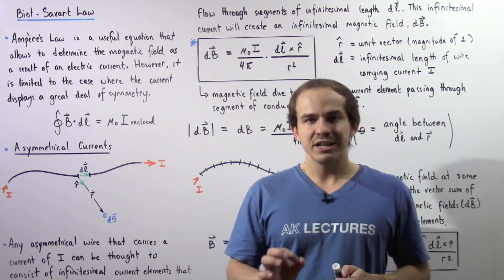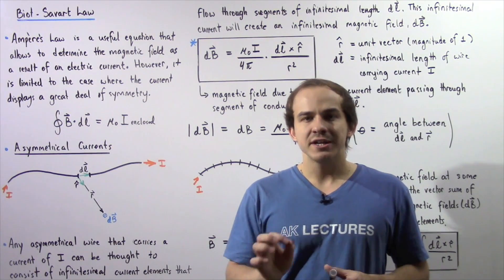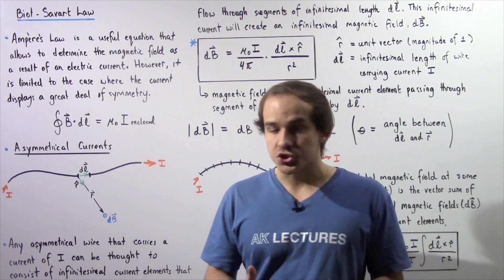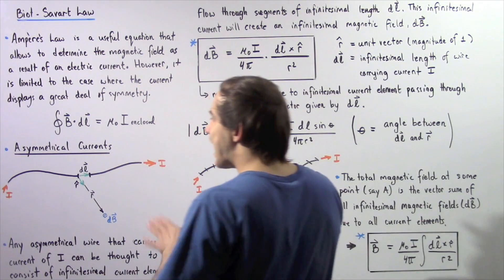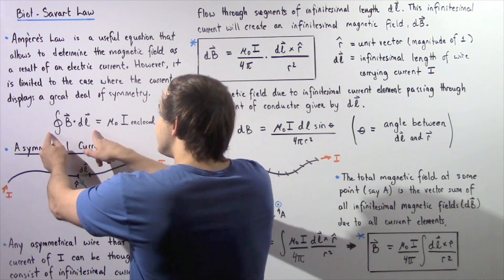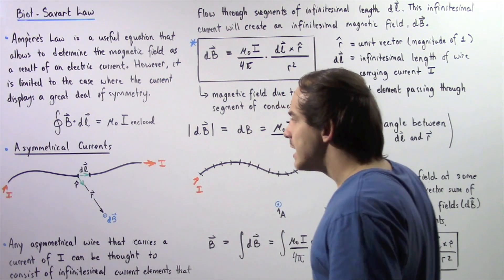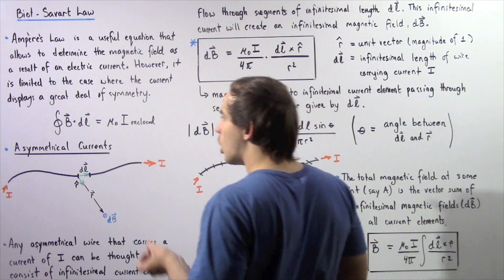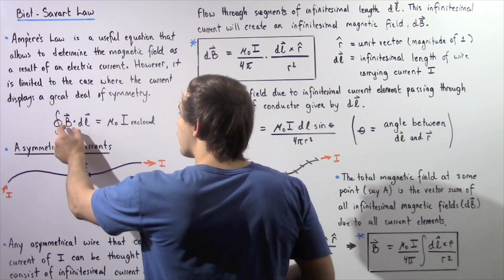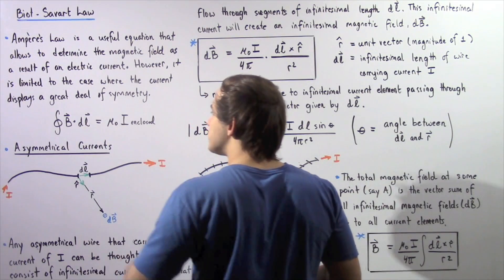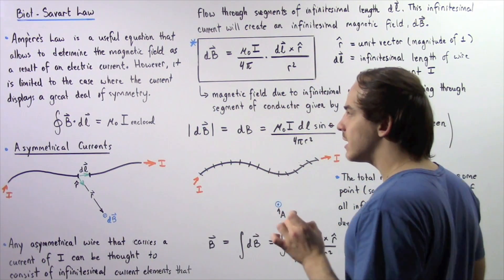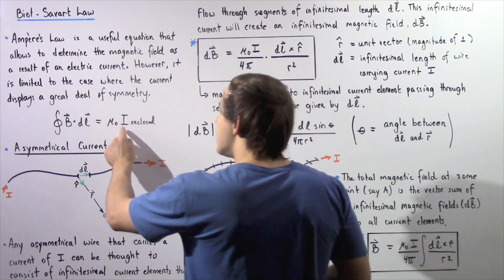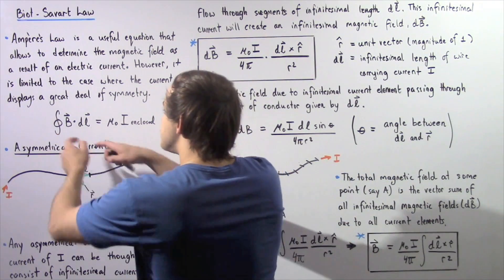However, Ampere's Law is limited only to the special case when there is a great deal of symmetry displayed by our electric current. We can only use Ampere's Law as long as we can calculate the left side of our equation: the closed integral around some closed pathway of the dot product of magnetic field B and infinitely small segment DL, equal to mu naught multiplied by the electric current enclosed by this surface.